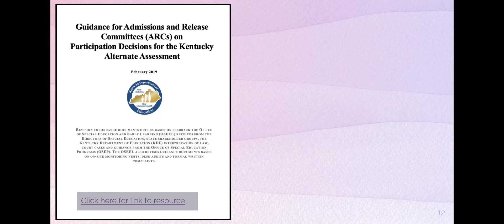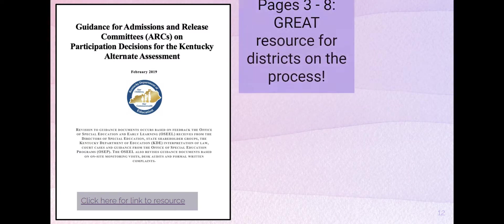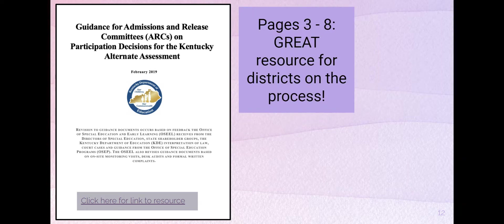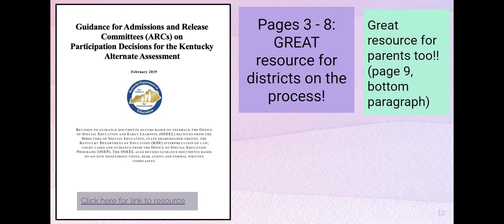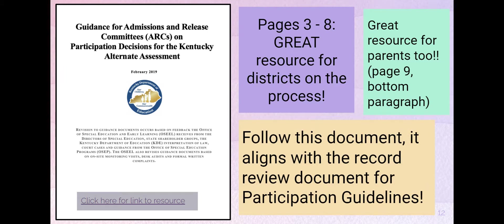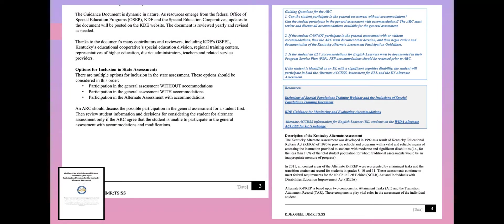Let's take a deeper look into the guidance document. Pages 3 through 8 have great resources for districts on the process of making that alternate assessment decision. On the bottom of page 9, there is excellent information for parents that we're going to dive into, and you'll want to follow this document carefully because it aligns very carefully with the record review document for the participation guidelines.